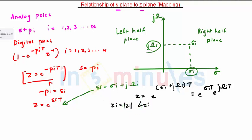Comparing the terms, we get that the magnitude |z_i| = e^(sigma_i*t) and the angle = omega_i*t. These are the conditions for magnitude and angle.